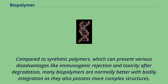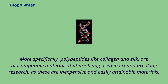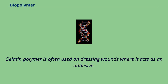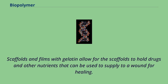Compared to synthetic polymers, which can present various disadvantages like immunogenic rejection and toxicity after degradation, many biopolymers are normally better with bodily integration as they also possess more complex structures, similar to the human body. More specifically, polypeptides like collagen and silk are biocompatible materials that are being used in groundbreaking research, as these are inexpensive and easily attainable. Gelatin polymer is often used for dressing wounds where it acts as an adhesive. Scaffolds and films with gelatin allow the scaffolds to hold drugs and other nutrients that can be used to supply to a wound for healing.